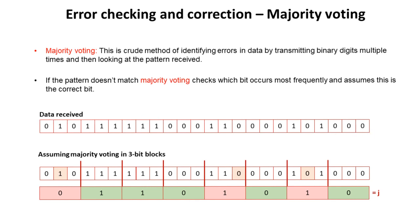Here we receive a string of data. We're assuming majority voting in blocks of three, so every single bit is being sent three times. A bit should be a one or a zero, so we check the first block and notice we've got two zeros and a one — the two zeros override the one and it records the result as zero. Three ones: no problem. Three ones: no problem. Three zeros: no problem. Here we receive two ones and a zero — it knows there must be a problem, two ones out-vote zero so it records a one, and so on. The received pattern is automatically corrected and we receive the letter J. The advantage is we don't have to request the data again, however we are sending three times the amount of bits just to receive an eight-bit character.